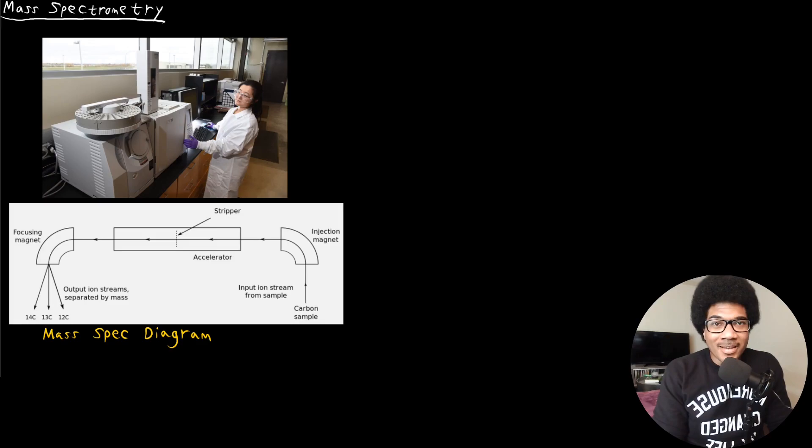Mass spectrometry is one of the most popular techniques in chemistry. If you're very familiar with forensic science shows, they use this technique a lot for identifying different compounds in samples that they get from crime scenes. The device that they use looks very similar to this in this picture.